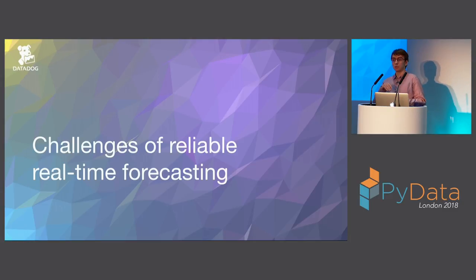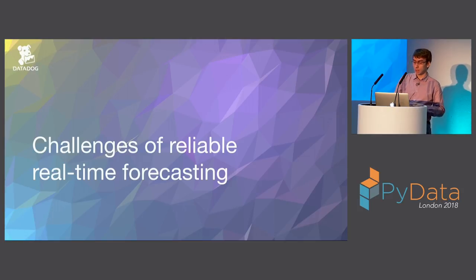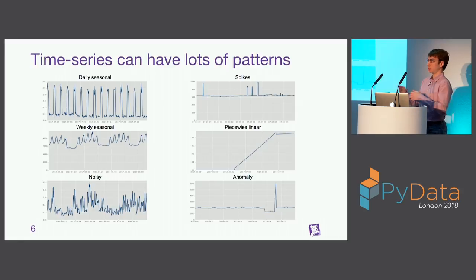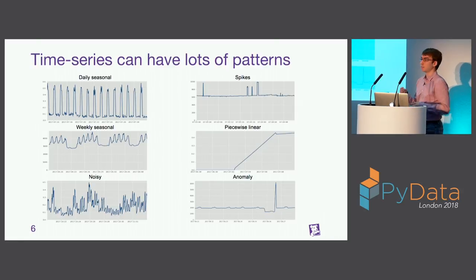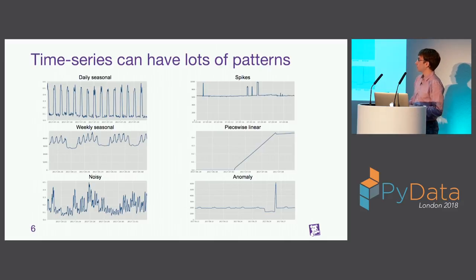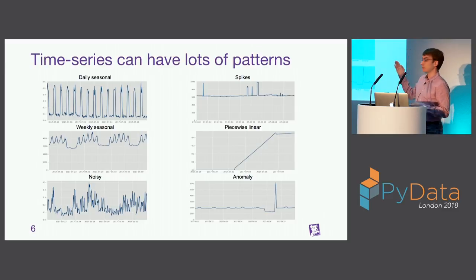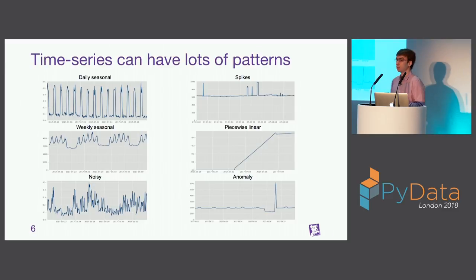As we started to look more thoroughly into these use cases, we started to meet some challenges. The first challenge is that because of the various sources — utilization metrics, latency, error rate, business metrics — we have to deal with lots of different patterns. The metrics can be seasonal, noisy, have spikes, be piecewise linear, or have anomalies that we might want to avoid. For each of those metrics, we should be able to output a forecast that is relevant to the user.